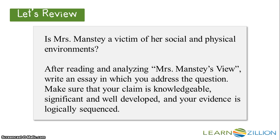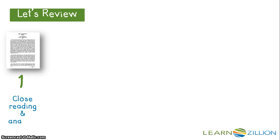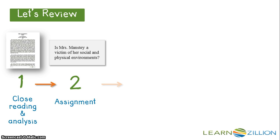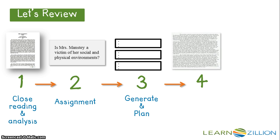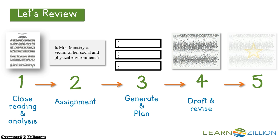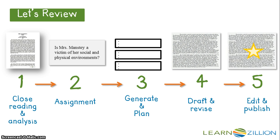Remember, writing is a process. First, we did a close reading of Mrs. Manstey's View. Then, we looked at the writing prompt, or the assignment. The third step is to begin planning. After mapping out your plan, you then move to step four, which includes crafting the draft and revising the paper. The final step of the writing process is the editing and publishing. We've already addressed the first two steps, so for this lesson, we will spend time on step three: Generating and Planning our Essay.